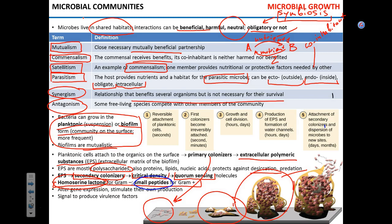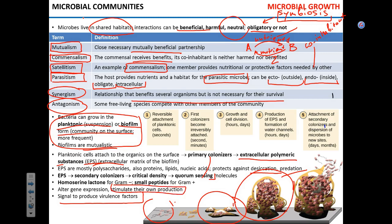Quorum sensing molecules alter gene expression by being transported into the cell or interacting with receptors. They change metabolic processes and growth rate, and may trigger production of virulence factors. A fully formed biofilm may produce virulence factors that individual cells do not produce — called pod induction. Quorum sensing may also slow growth and enable motility so microorganisms can spread. This community is far more sophisticated than individual microorganisms growing alone.